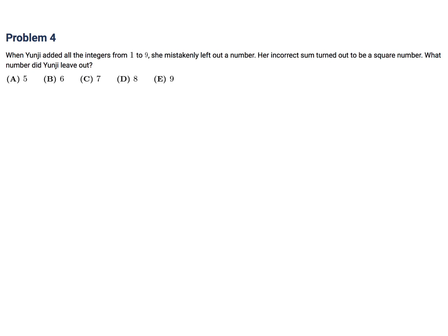When Yunji added all the integers from 1 to 9, she mistakenly left out a number. Her incorrect sum turned out to be a square number. What number did Yunji leave out? Well, if you add up all the numbers from 1 to 9, that sum is 45. So some number is taken out and it results in the sum being a perfect square. Now, the perfect squares below 45 are 36 and then 25 and so on. Now, we can only take out one number. So obviously 36 is what we're shooting for. And that is obtained when you take out the 9.